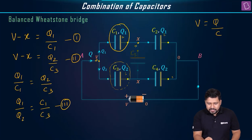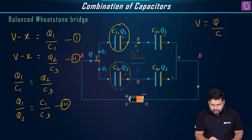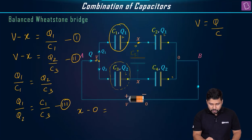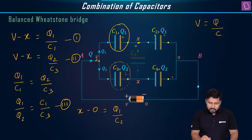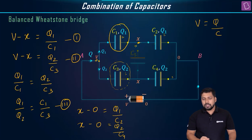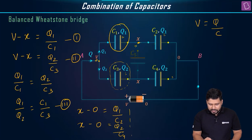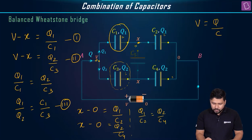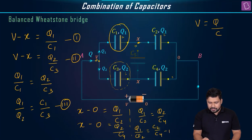Now let us write the potential difference across C2 and across C4. Across C2: X minus 0 equals Q1/C2. Across C4: X minus 0 equals Q2/C4. Equating them: Q1/C2 = Q2/C4, which gives Q1/Q2 = C2/C4. This is equation number 4.